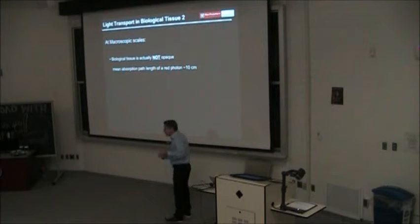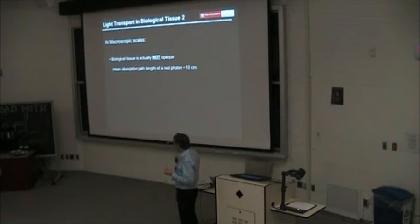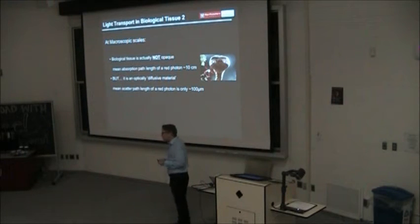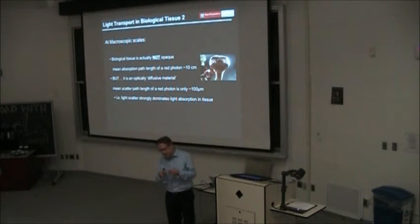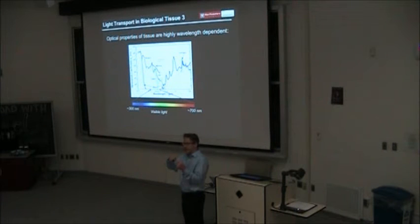At microscopic scales, a lot of people think tissue's opaque. How can you possibly do that? But that's actually not true. Light tissue is not opaque at all. In fact, if you shoot red light into tissue, it will actually go on average about 10 centimeters before it gets absorbed. So a red photon can go 10 centimeters before it gets absorbed. But it's actually a diffusive material. The scatter mean free path is only about 100 micrometers. So it scatters much more than it absorbs.